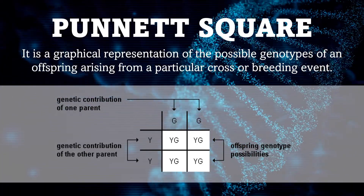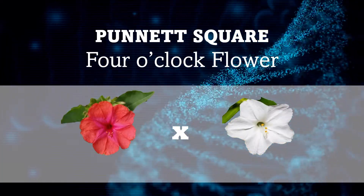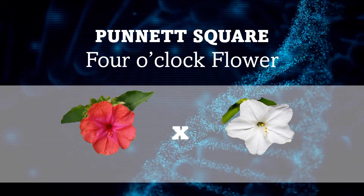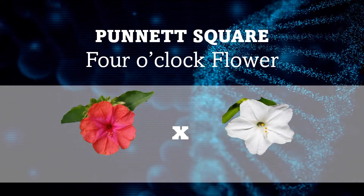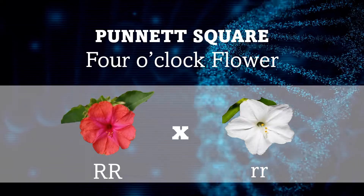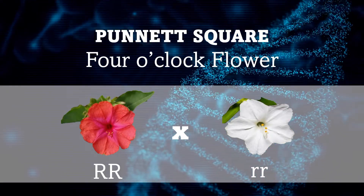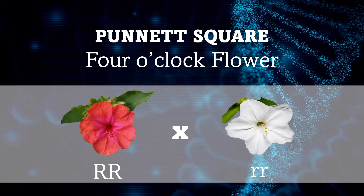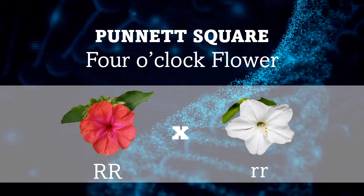In this case, one plant producing red flowers and another plant producing white flowers are crossed. The first step is to determine the genotypes of the parents. For this case, the genotype of the red four o'clock flower is two capital R (RR), while the white flower is two small r (rr). We use the letter R to represent the genotype because the red one is the dominant trait. In genetics, we use the first letter of the dominant trait — written in capital letter to represent dominant, and small letter to represent recessive traits.